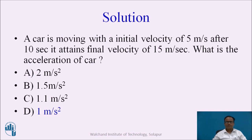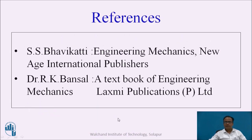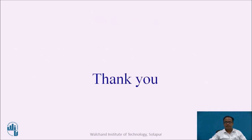A car is moving with a velocity of 5 m/s and after 10 seconds it attains a final velocity of 15 m/s. The acceleration can be obtained using a equals (v minus u) divided by t: final velocity is 15, initial velocity is 5, time is 10 seconds. So acceleration equals (15 minus 5) divided by 10, which equals 1 m/s². These are the references used for the creation of this video. Thank you.